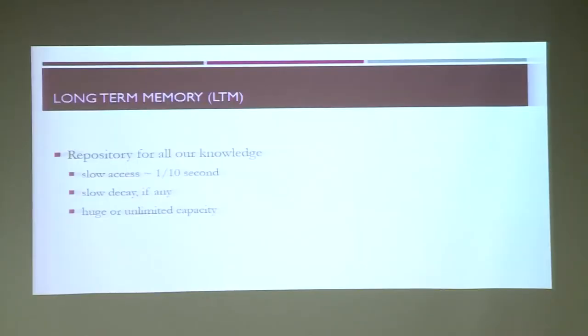Moving on to long term memory. How do you train your long term memory? Information shifts from short term memory to long term memory by rehearsal. Things shift from sensory memory to short term memory just by paying attention. But for long term memory, you have to rehearse many times to memorize things. Long term memory has a slow access rate — around 1 to 10 seconds — but its decay rate is also very slow. You do not forget things quickly and its capacity is unlimited, although the information residing in memory keeps changing.